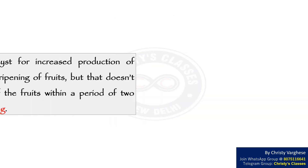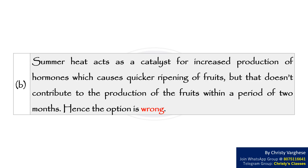Consider option B. Summer heat acts as a catalyst for increased production of hormones which causes quicker ripening of fruits, but that doesn't contribute to the production of fruits within a period of 2 months. Hence, the option is wrong.